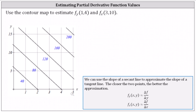Use the contour map to estimate the partial derivatives: the partial of f with respect to y at (1, 4), and the partial of f with respect to x at (3, 10). We can use the slope of the secant line to approximate the slope of the tangent line — the closer the two points, the better the approximation. To approximate the partial of f with respect to y, which gives the slope of the tangent line in the positive y direction, we select two points in the y direction and determine the change in the function value divided by the change in y.